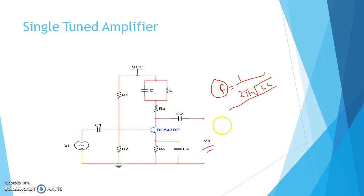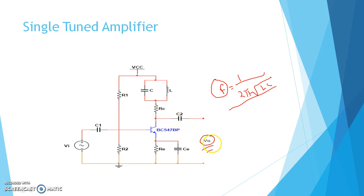At that frequency the gain will be very high for this configuration. As a result, we can get the output at only that frequency and all other frequency components will be rejected by this circuit.